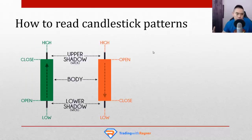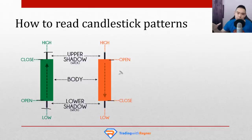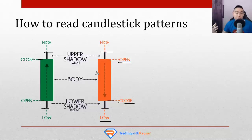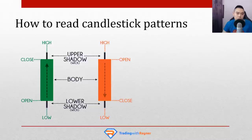To summarize: for a bullish candle, the opening price is at the bottom and the closing price is at the top. For a bearish candle, the opening price is at the top and the closing price is below — because the bar has closed below the opening price. The low of the candle is at the very bottom. Another terminology to know: the body refers to the colored segment of the candlestick. The thin lines sticking out are called the wick or shadow — the one at the top is the upper shadow or upper wig, and the one at the bottom is the lower shadow or lower wig. That's how you read a candlestick pattern.